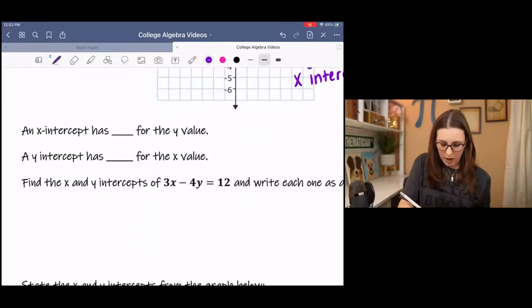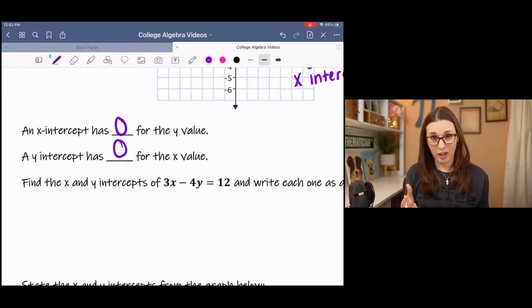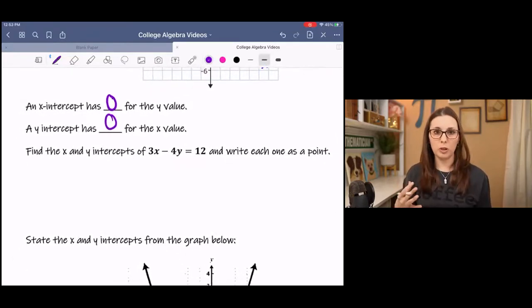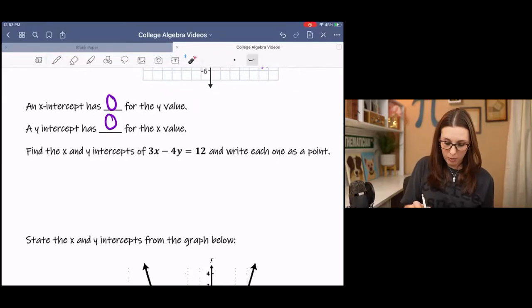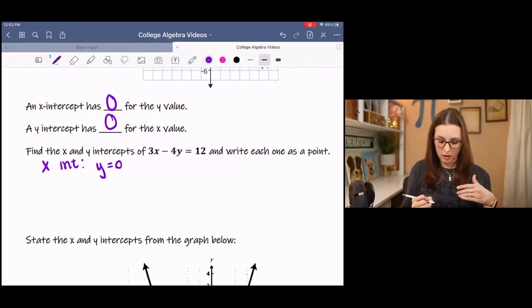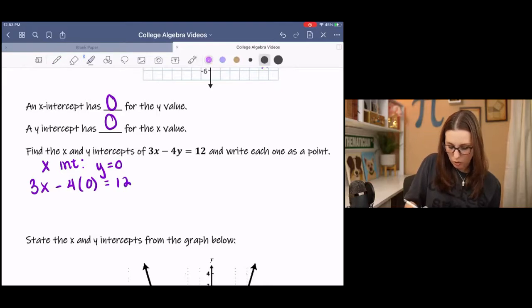So an x-intercept, to summarize, has a 0 for the y-value, and the y-intercept has a 0 for the x-value. If we're given an equation, we can use that knowledge to help us find an x and y-intercept without graphing. Sometimes it's kind of a pain to draw a graph or solve for y, to draw the graph or whatever. So you can use this in its general form to find the x and y-intercept. So we know that for an x-intercept, I'm going to abbreviate here, that y is 0 because it has no height.